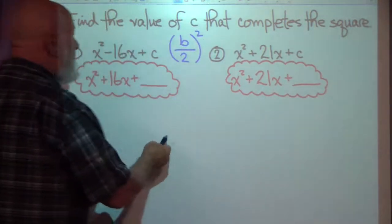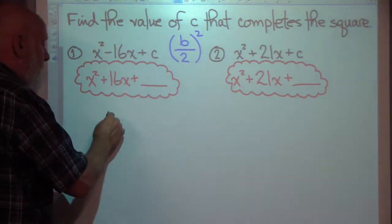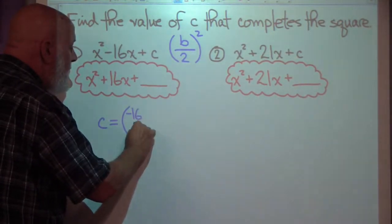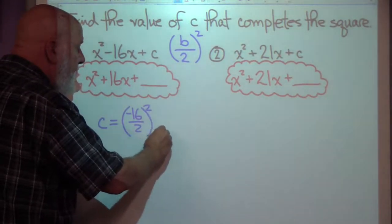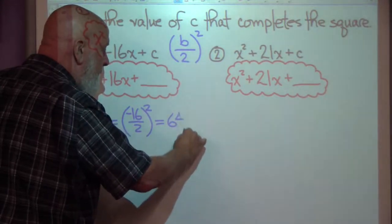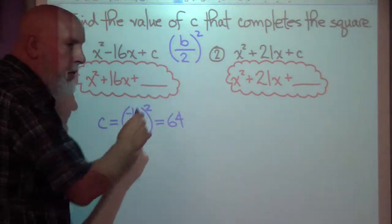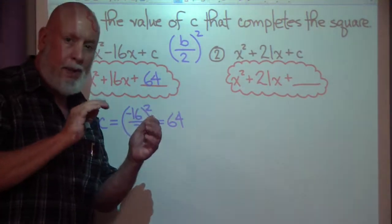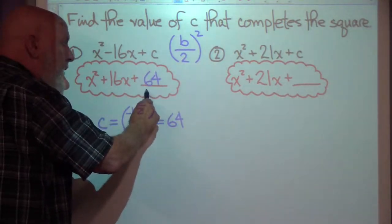Right now we're just looking for the value of c. c equals half of b squared. There's b: negative 16. Half of b is negative 8, squared. Well, negative 8 times negative 8 is positive 64. So the value that completes the square here would be 64. If you were going to write that as a quadratic trinomial, you just put the value of c right here. That's finding c — we just completed the square. This is the value that completes the square.